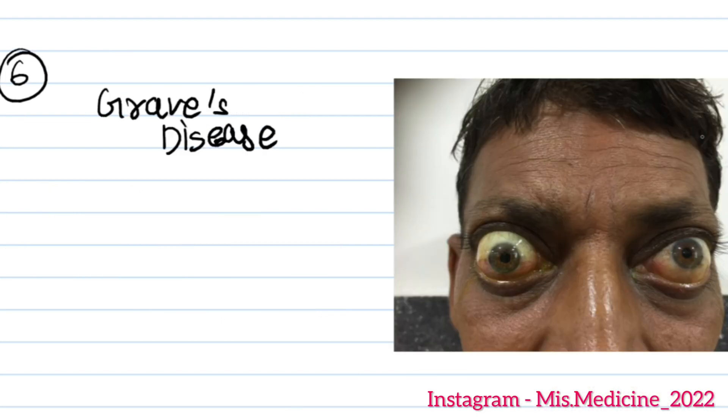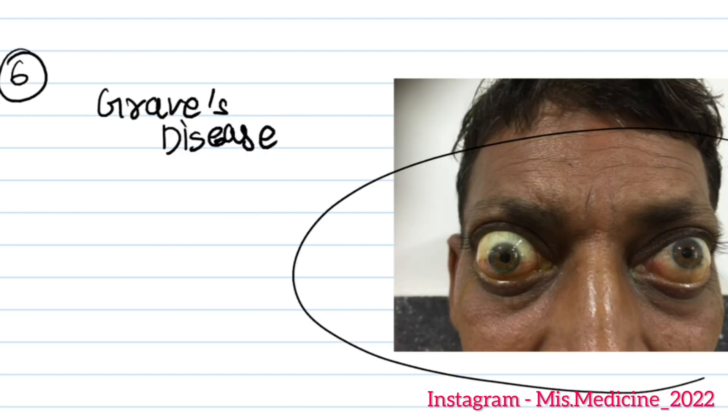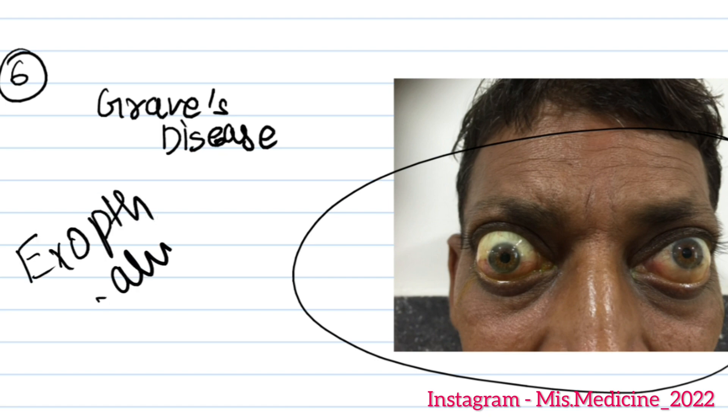The next image was exophthalmos — a sign which is seen in Graves' disease.